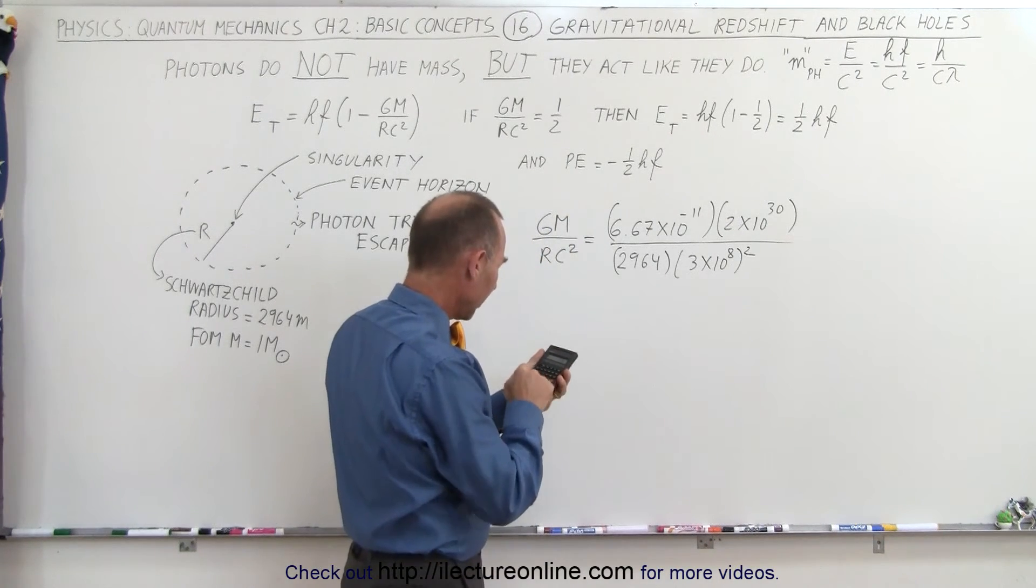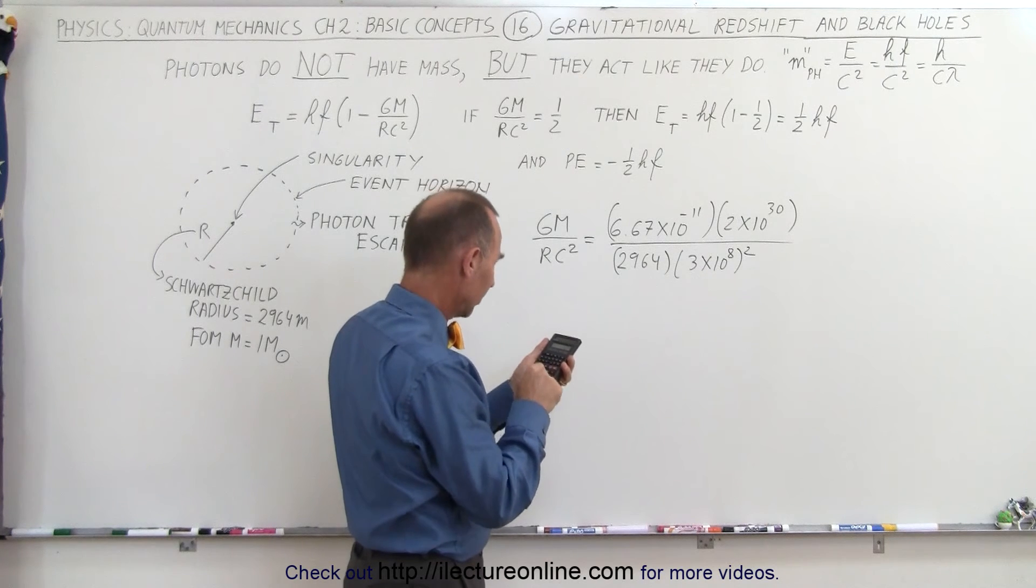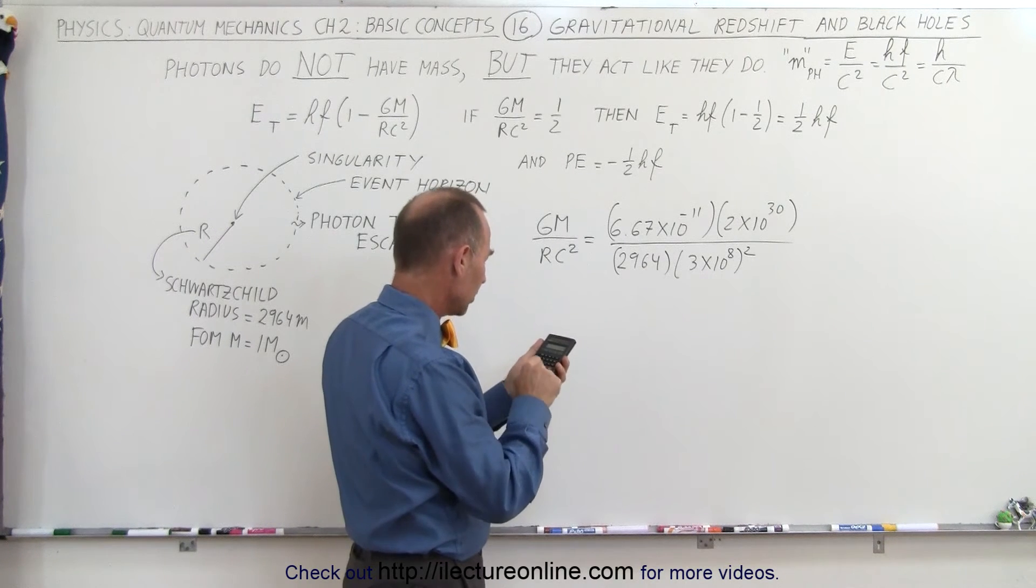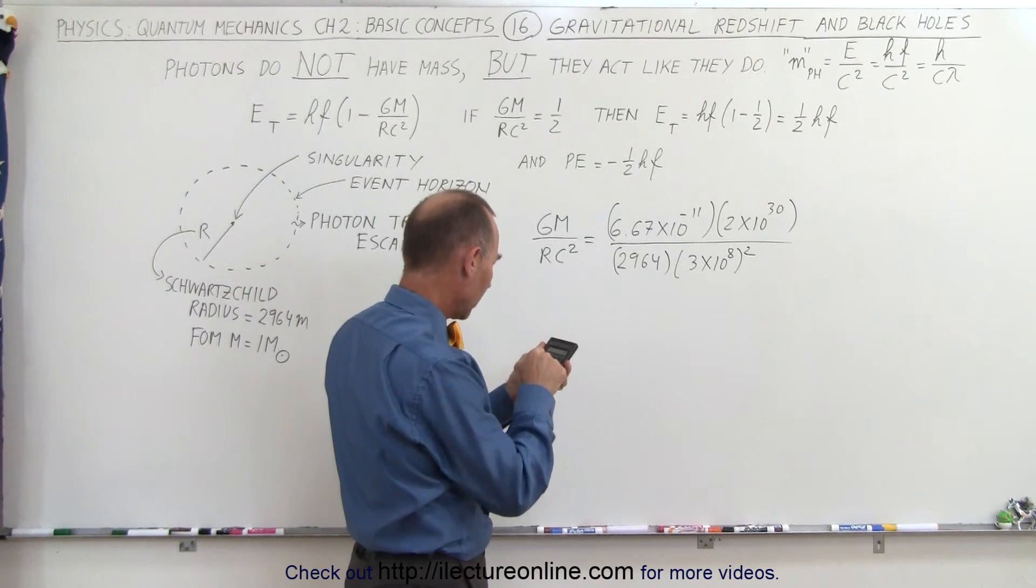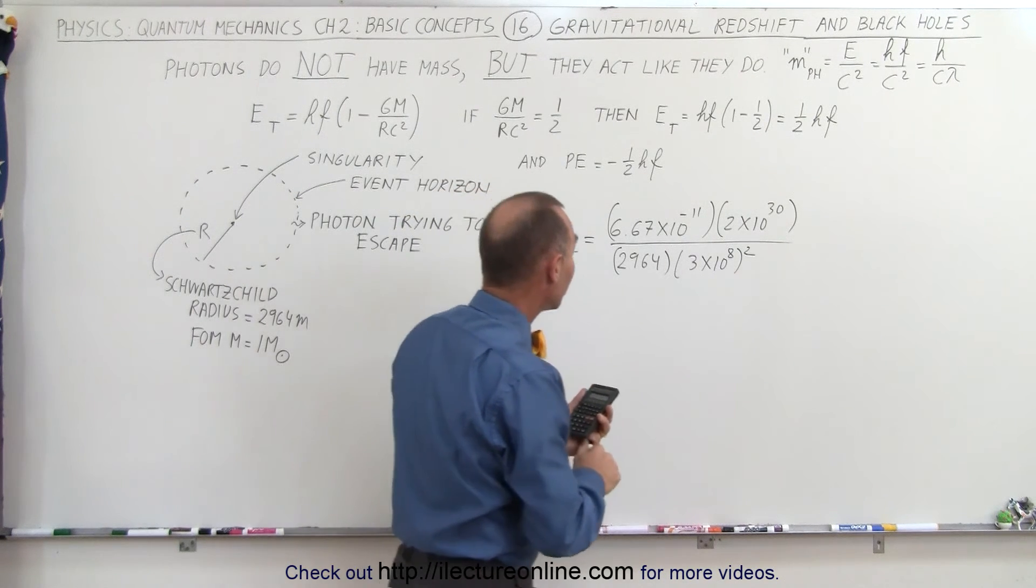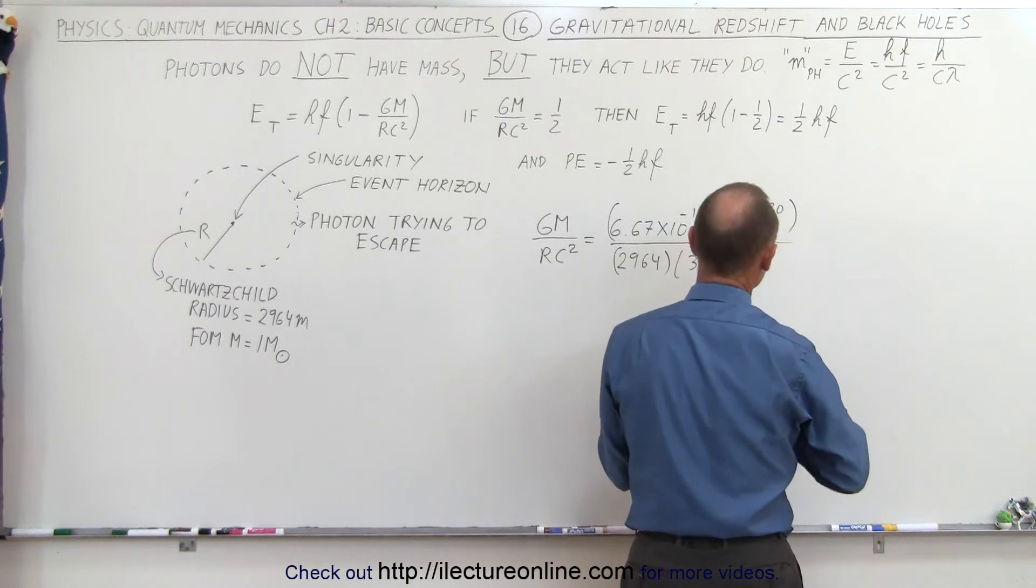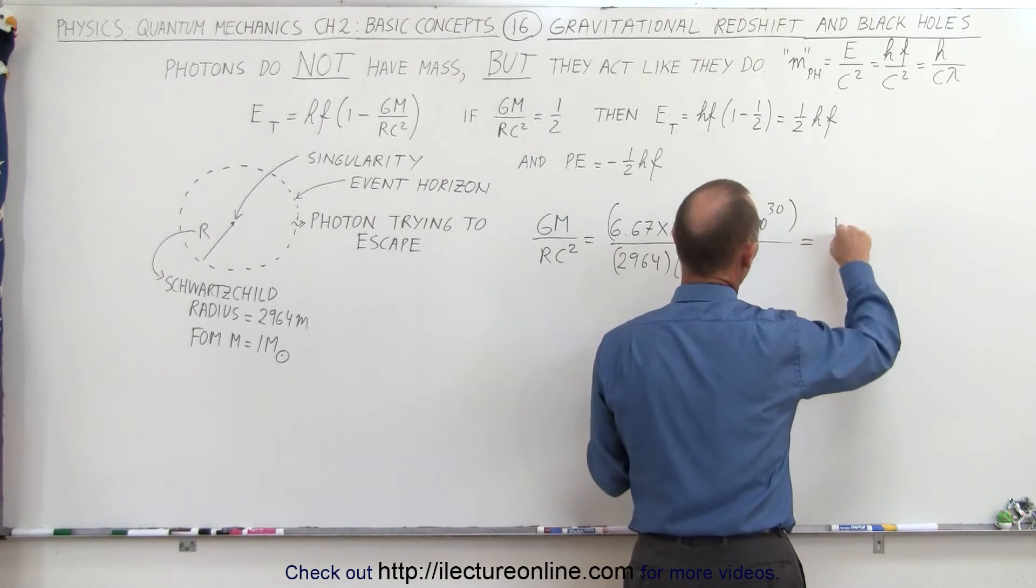So we have 6.67e-11 times 2e30 divided by 2,964 and divided by 3e8 squared, equals, and as we predicted, that is exactly equal to one half.